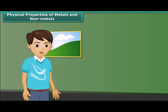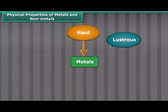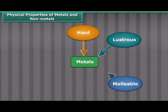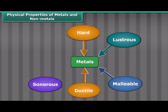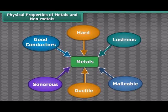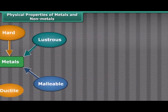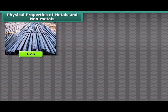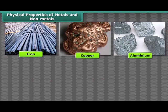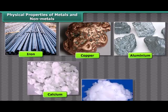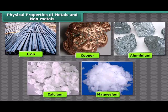So friends, by these properties we can say that metals are hard, lustrous, malleable, ductile, sonorous, and good conductors of heat and electricity. Iron, copper, aluminium, calcium, magnesium, etc. are the examples of metals.